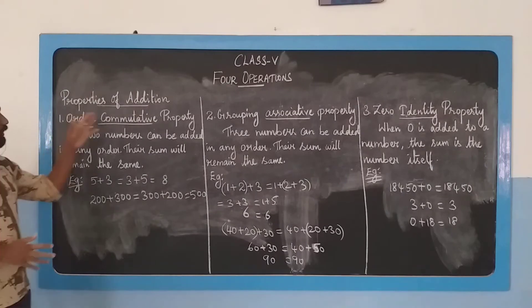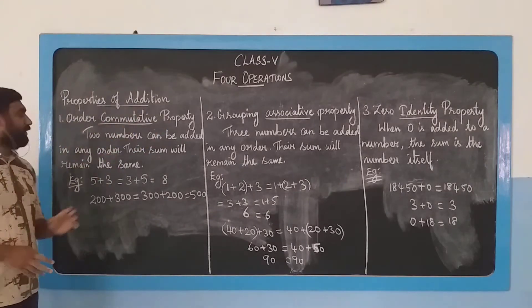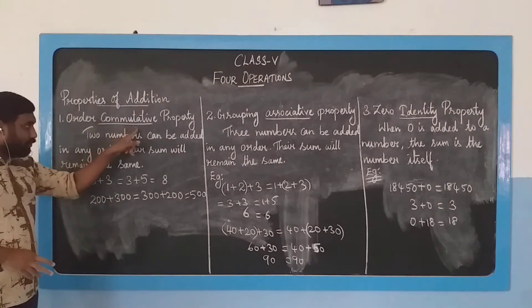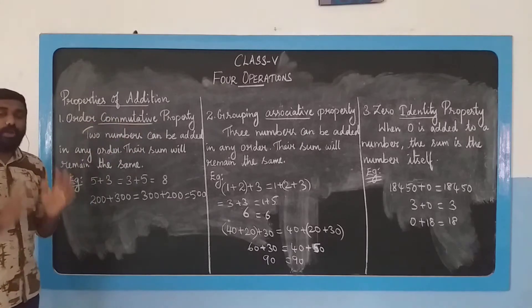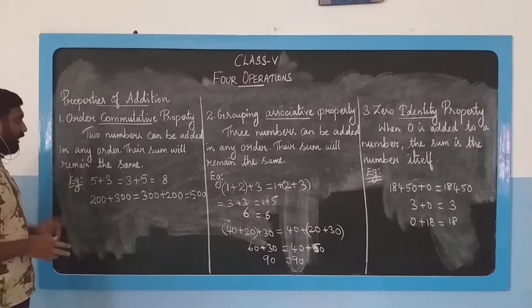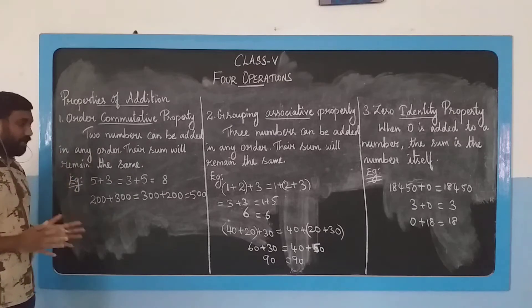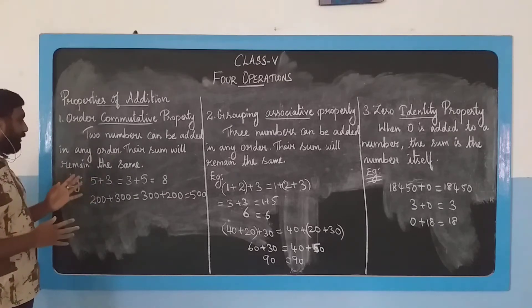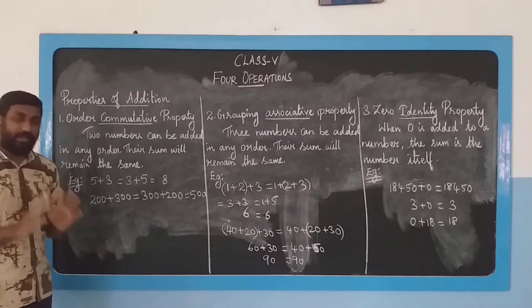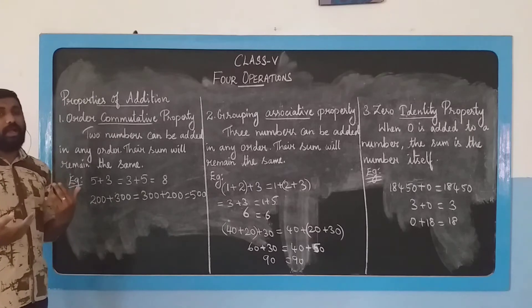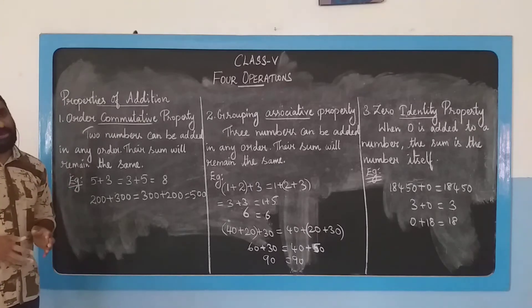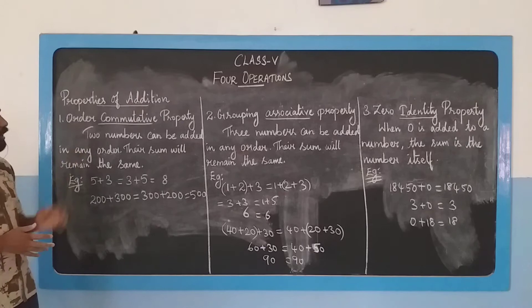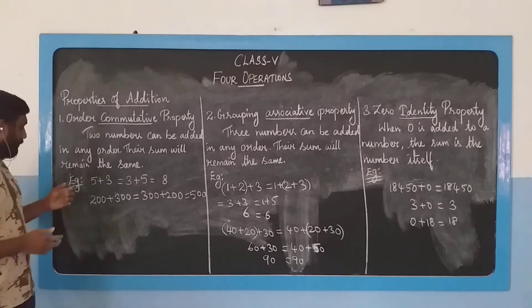The first one is the commutative property. What does this property say? Two numbers can be added in any order and the sum remains the same. Sum means addition. However you add numbers, the answer remains the same. That is what the commutative property means.